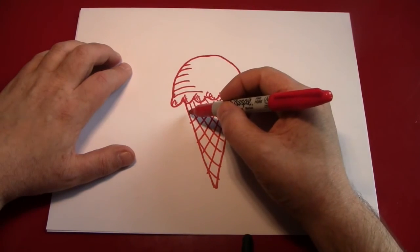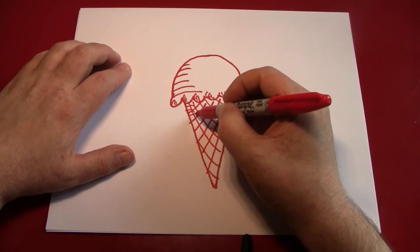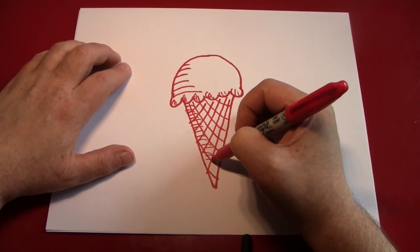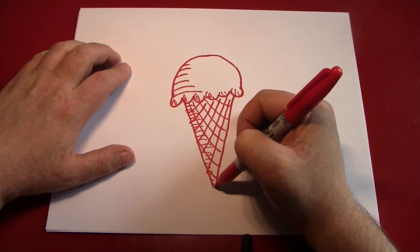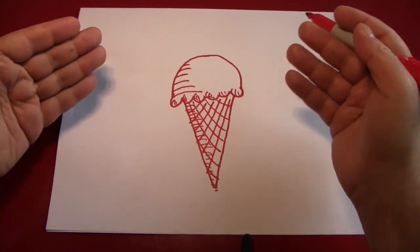Next, we're going to put some shadowing on the cone itself. Give that a little bit of depth also. And there you are, it's an ice cream cone.